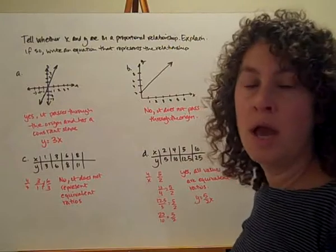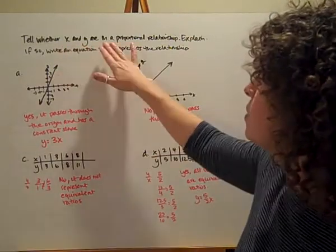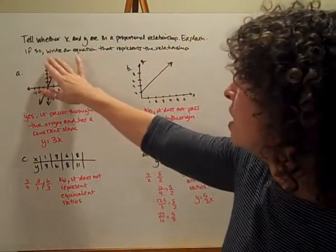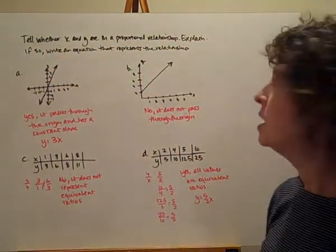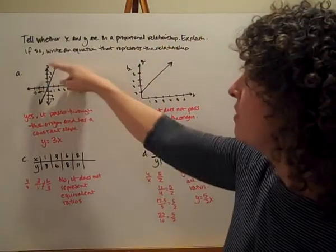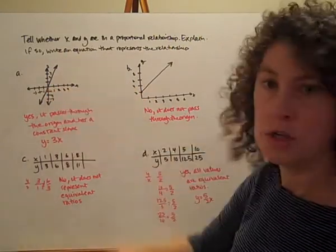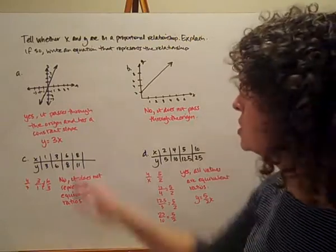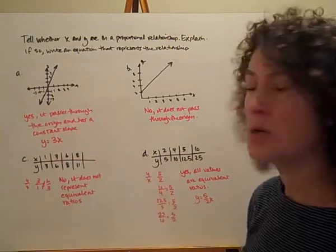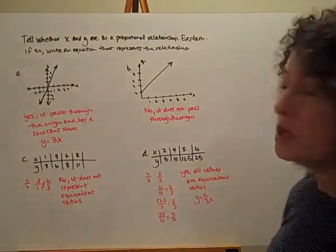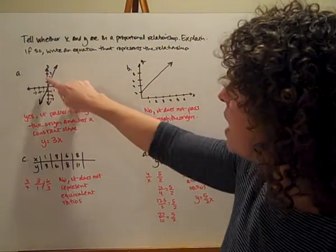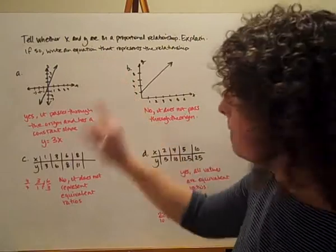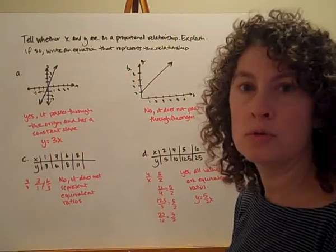Decide if they're proportional, and if they are, write an equation. So tell whether x and y are in a proportional relationship and explain. If they are, write an equation that represents the relationship. Here we have this graph — yes, it does pass through the origin and it does have a constant slope, so it is proportional. It passes through the origin and has a constant slope. Now to come up with an equation, I'm going to look for the slope: a rise of 3 and a run of 1. So my equation is y equals 3x.